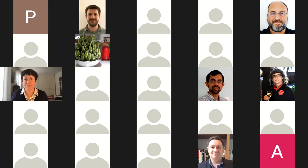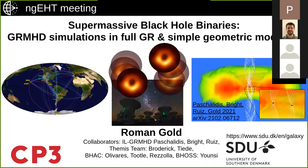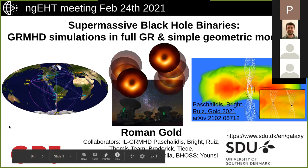Next up is Roman Gold, talking about GRMHD simulations of supermassive black hole binaries. He's been working on these simulations in full general relativity since 2012, with recent work by collaborators Pascalides, Bright, and Ruiz. He also discusses how to connect these with VLBI observations. At the University of Southern Denmark, there is a new space initiative starting, involving partner institutions in Denmark and Danish space agencies, which could be useful for space VLBI additions.